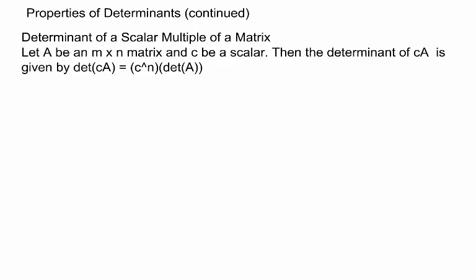The property states: let A be an m by n matrix and c be a scalar. Then the determinant of cA is given by det(cA) equals c raised to the power of m, where n represents the number of rows, multiplied by the determinant of A.